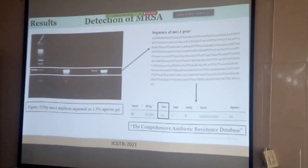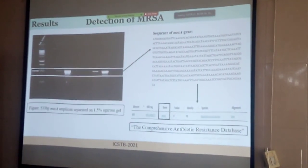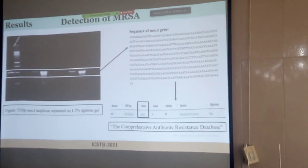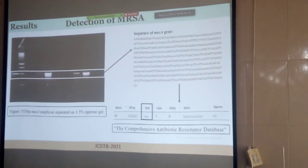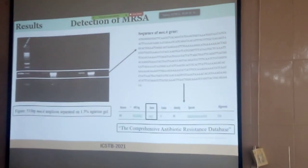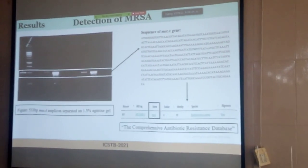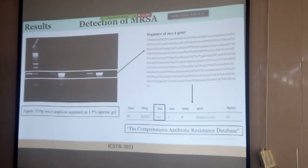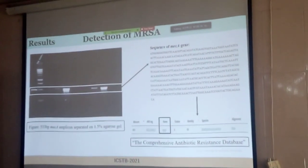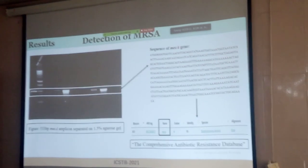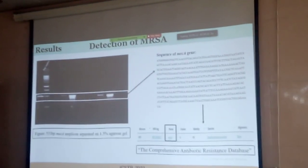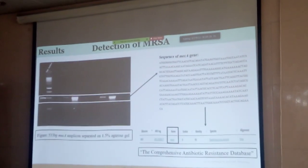For molecular detection of MRSA, we carried out mecA-specific PCR. The amplicon size was 533 base pairs. For further confirmation, we sequenced the gene and compared it with the reference database — the Comprehensive Antibiotic Resistance Database — and we found that the amplified product matched the expected sequence.